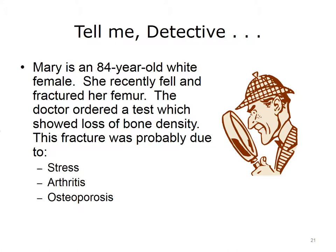How can you use the information on the musculoskeletal system to help make a diagnosis in this case? Mary is an 84-year-old white female. She recently fell and fractured her femur, which is the large bone in the thigh. The doctor ordered a test which showed loss of bone density. This fracture was probably due to osteoporosis. Remember that this condition is the abnormal thinning of the bone structure due to loss of calcium and phosphorus, making bones weak and more likely to break.